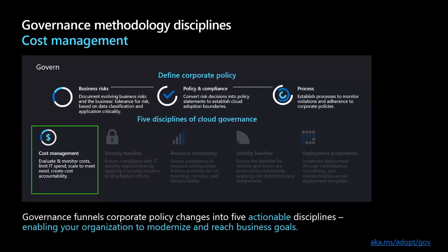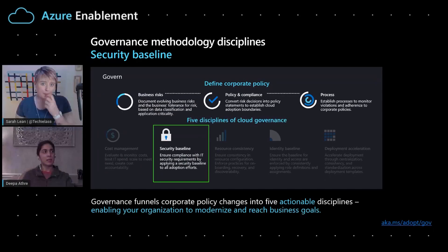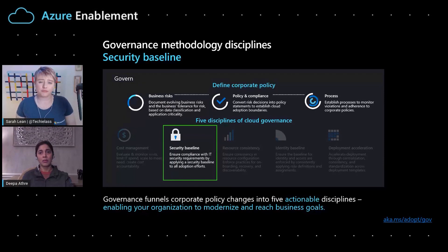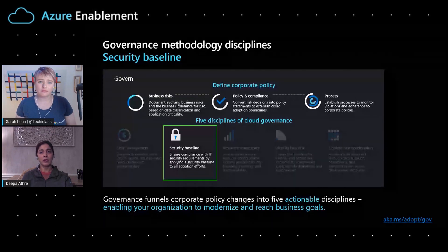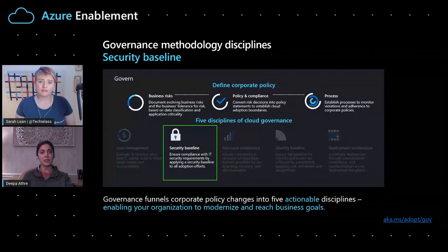The second discipline is security baseline. The good news here is that security is no longer a big blocker as it was in the past. It is important that we help our customers identify key policies to mitigate risks around the security of resources, data, connectivity, and storage. These policies could be related to data encryption, connectivity, accessibility of public IPs, or developing a standard for all Azure platform services.